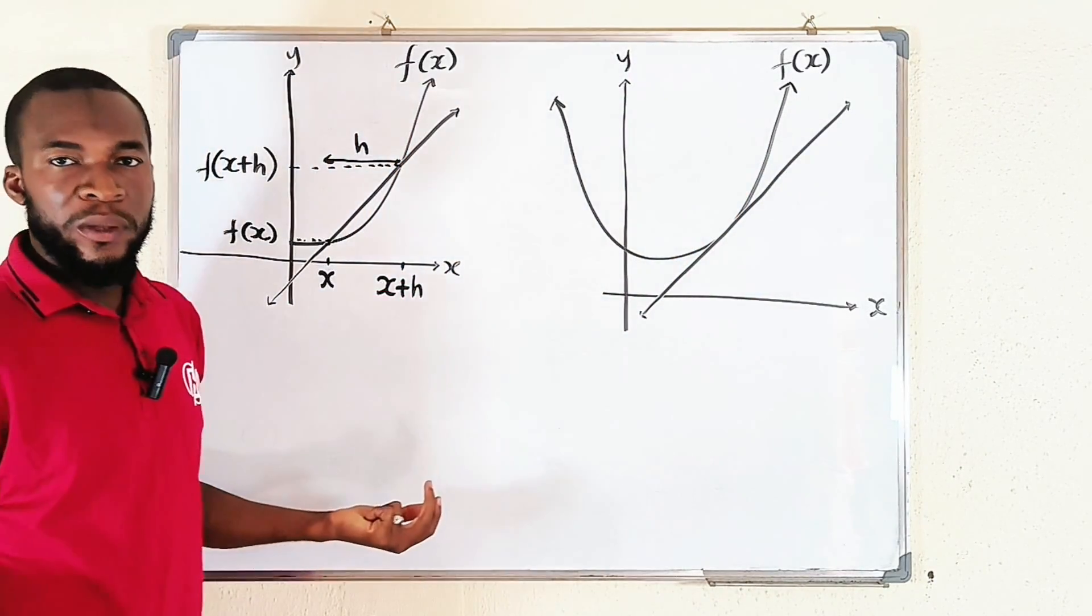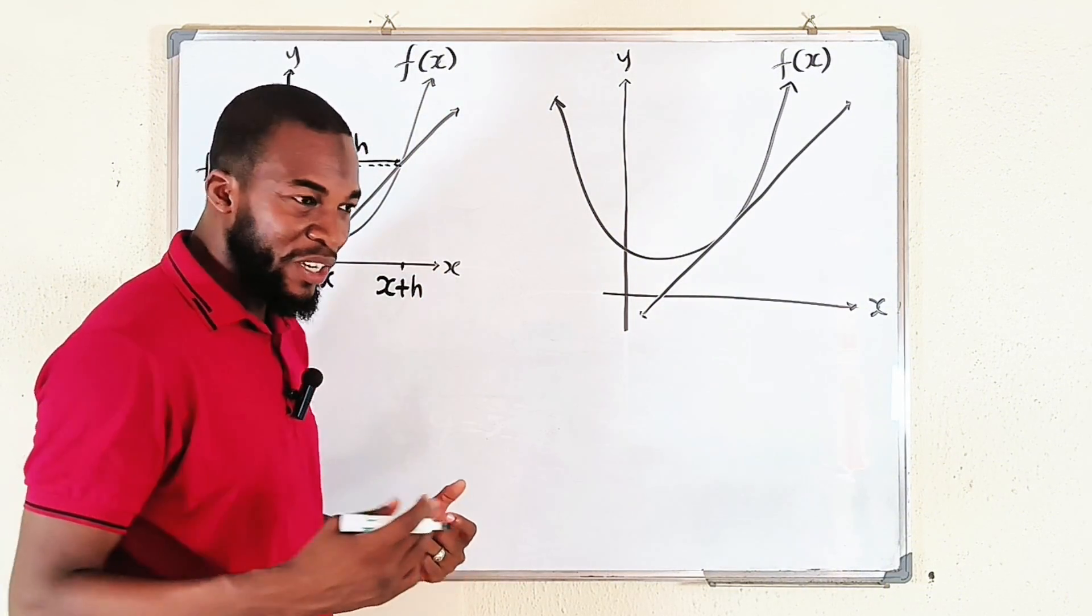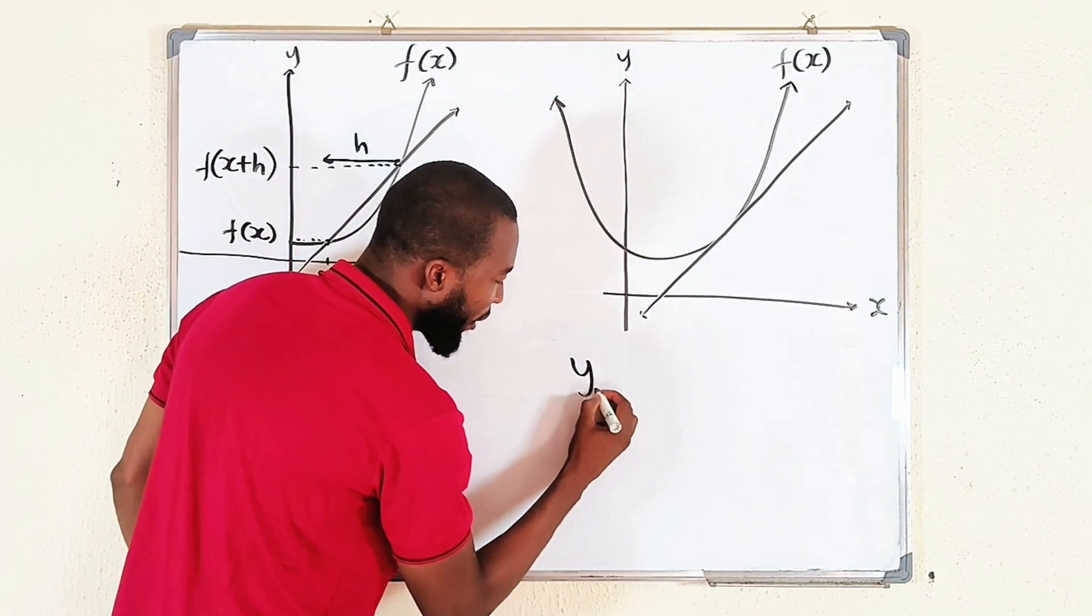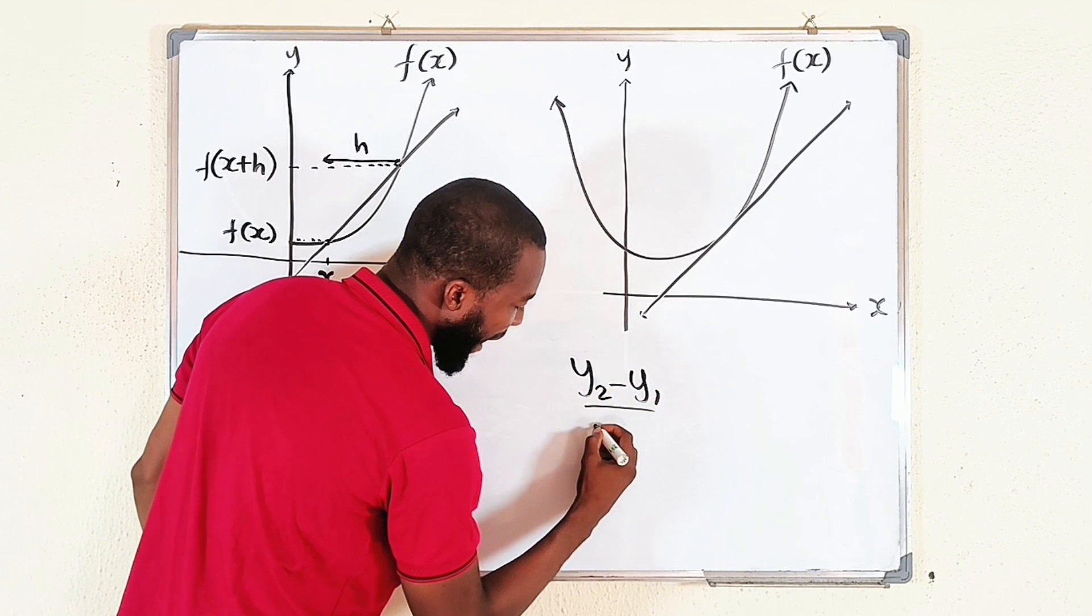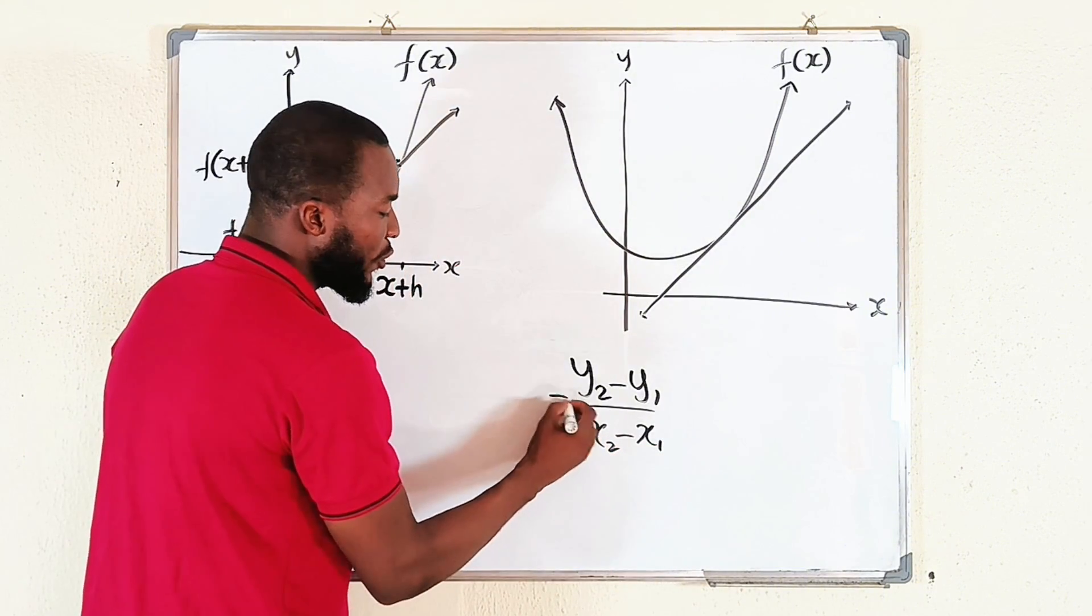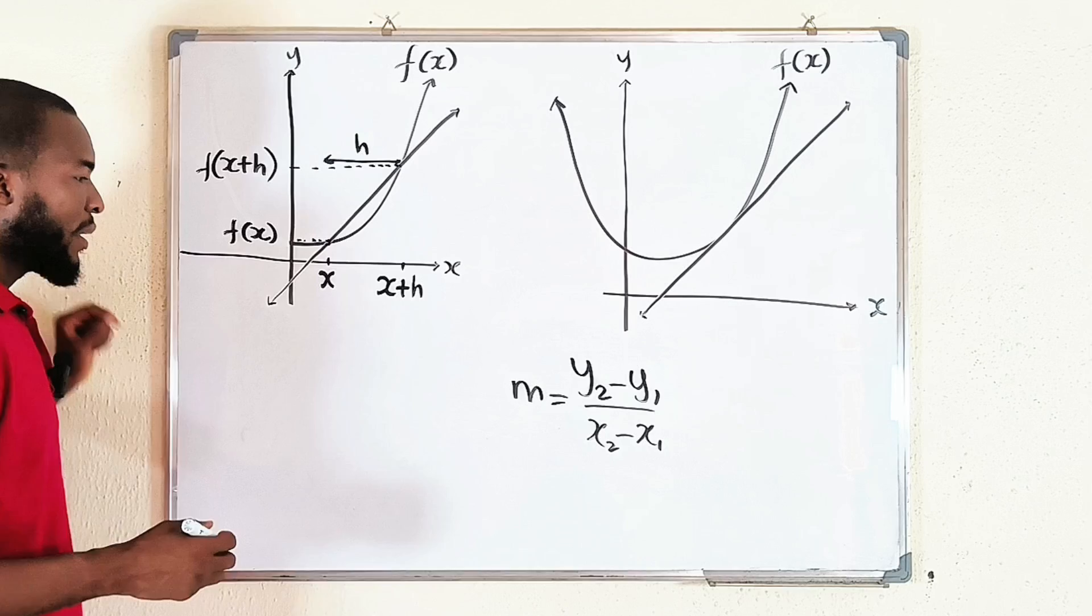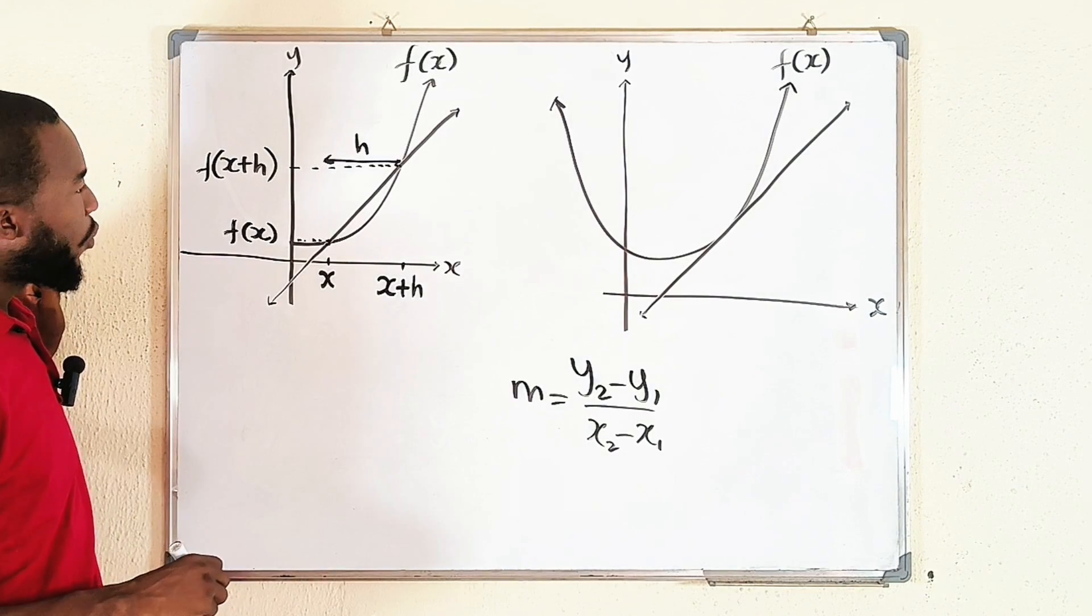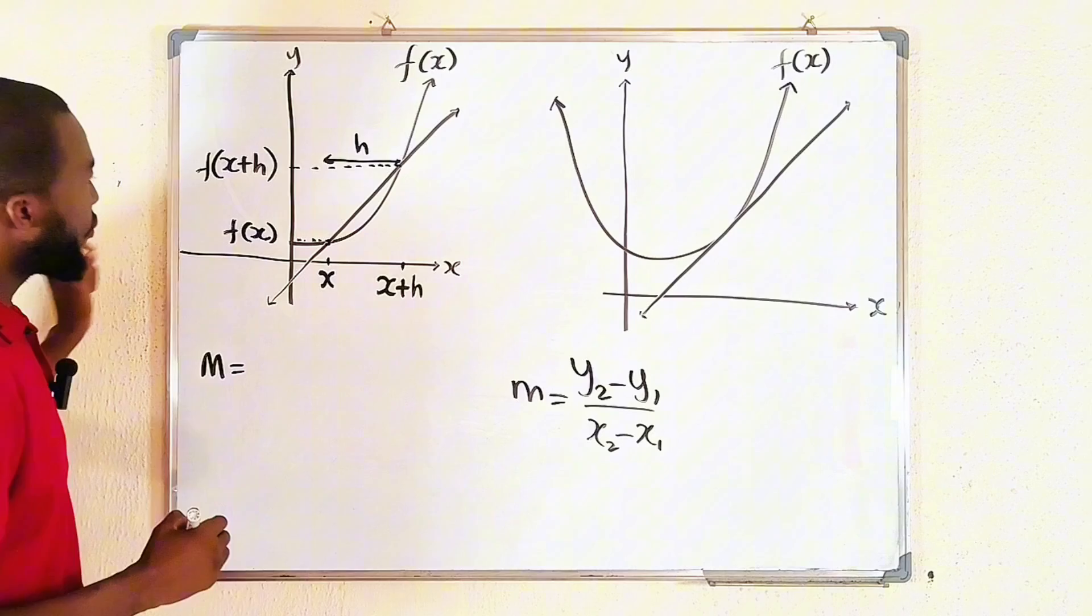How do we calculate slope? Slope is the tangent y divided by the tangent x. That is y2 minus y1 divided by x2 minus x1. This is the formula we use for the slope m.